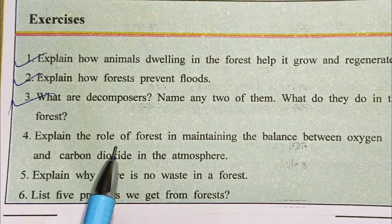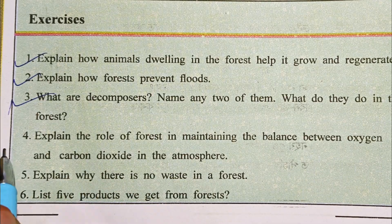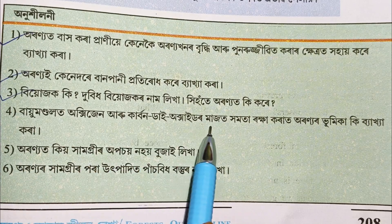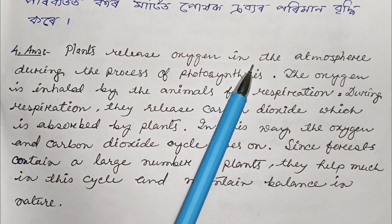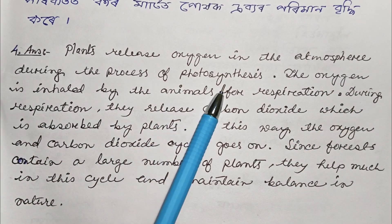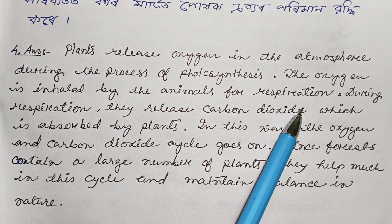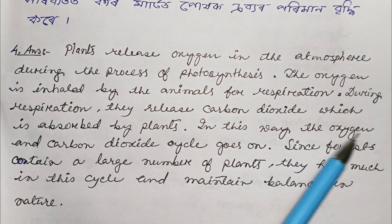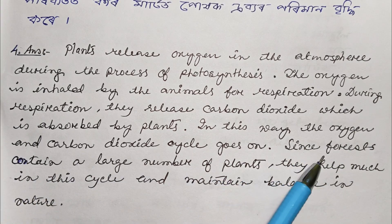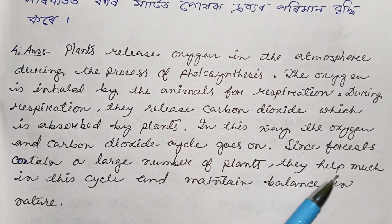Question number 4: Explain the role of forest in maintaining the balance between oxygen and carbon dioxide in the atmosphere. Plants release oxygen in the atmosphere during the process of photosynthesis. The oxygen is inhaled by the animals for respiration. During respiration, they release carbon dioxide which is absorbed by plants. In this way, the oxygen and carbon dioxide cycle goes on. Since forests contain a large number of plants, they help much in the cycle and maintain balance in nature.